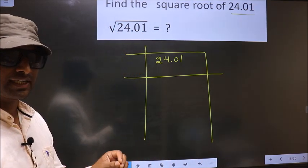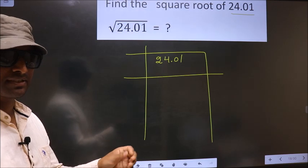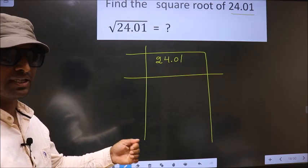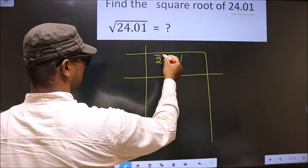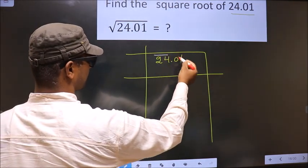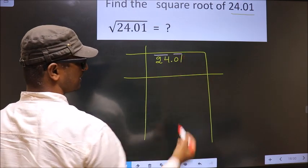Now we should divide the given number into pairs before the decimal and after the decimal. So decimal is here. Before the decimal, these two numbers, one pair and after the decimal, these two numbers, another pair.